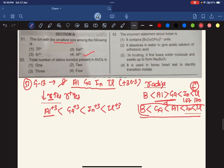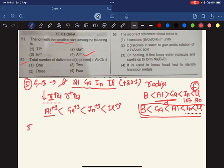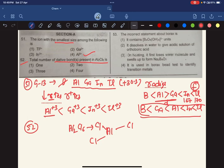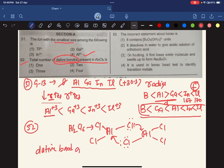After that, the question number is 52. 52 means the total number of dative bonds in Al2Cl6. So Al2Cl6, what is the dimer? Al-Cl, so Al with Cl and Cl. This is a dimer. And this is the number of dative bonds.